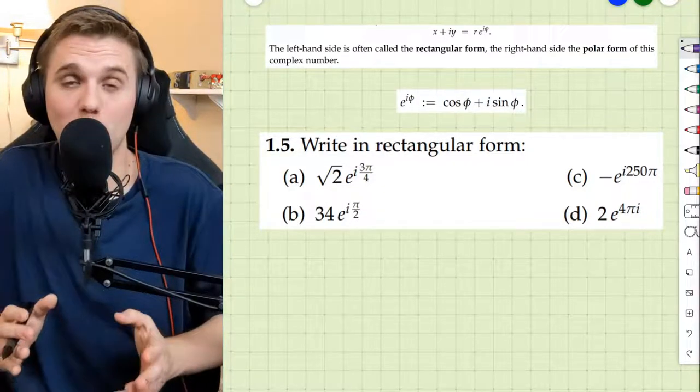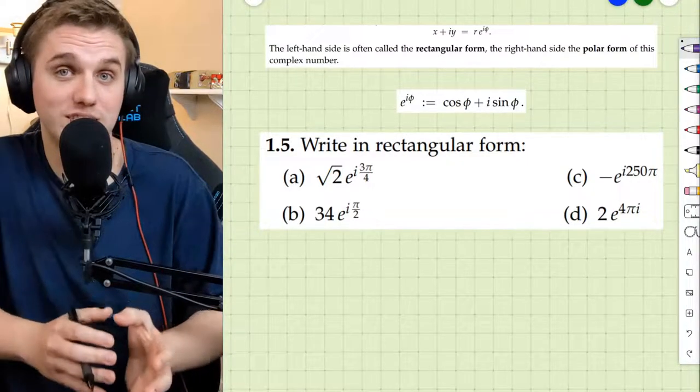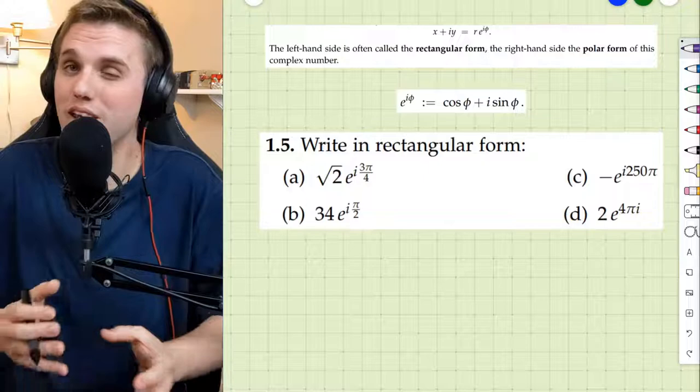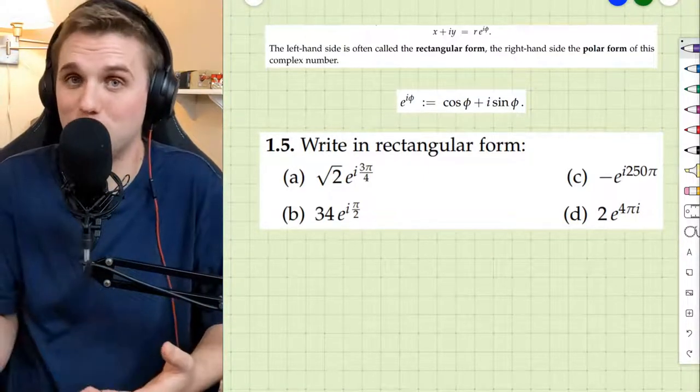Now in the last video we showed how to convert complex numbers from rectangular form to polar form and it's a little tough. Well, going from polar to rectangular is actually pretty straightforward, I think.